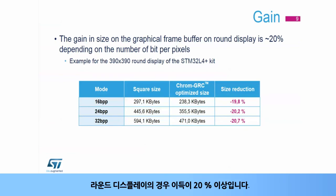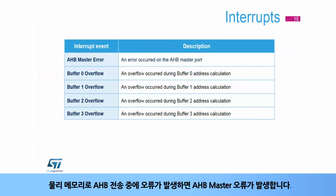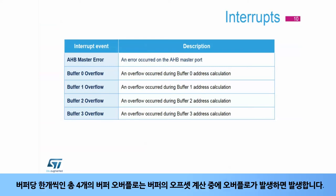For a round display, the gain is above 20%. There may be slight variation depending on the frame buffer color mode. The Chrome GRC manages five interrupt sources: AHB master error, when an error occurred during an AHB transaction to the physical memory; and four buffer overflows, one per buffer, when an overflow occurs during the offset calculation of a buffer.